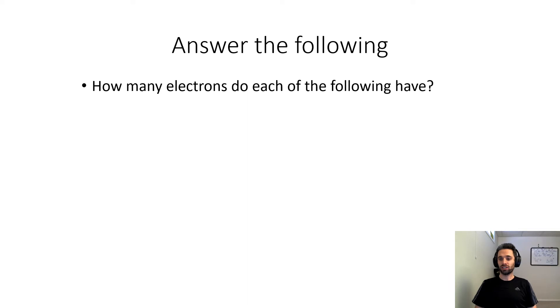And as usual, using the last slide you should be able to answer the following questions. How many electrons do each of the following have? The first example is iron with a three plus charge, and in example b we have tellurium with a minus two charge.